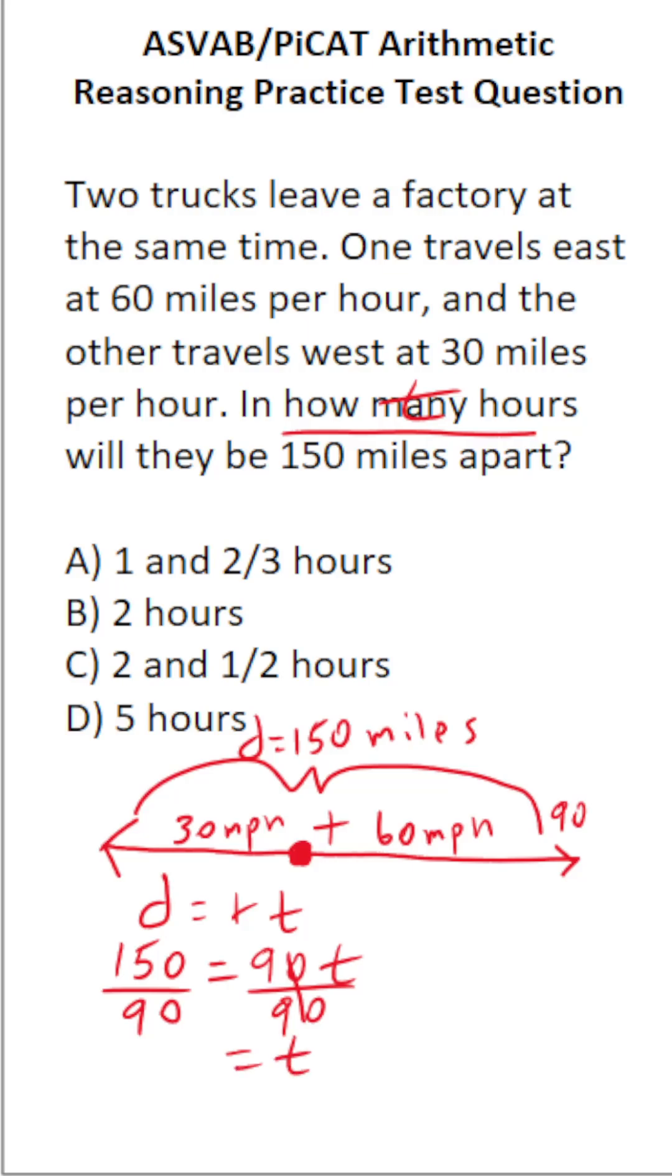Now we've got to do some arithmetic here. We can cross out these corresponding zeros. This says 15 divided by 9. 9 goes into 15 one time without going over. Just like that, we know our answer is going to be one hour and something. So you could say it's A with confidence right now. But let's keep working this out.